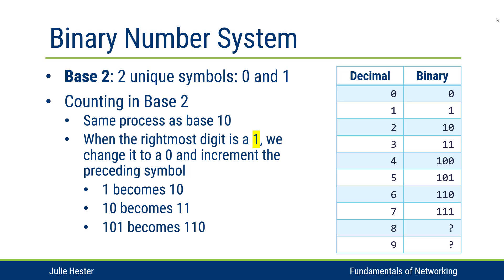Decimal seven is equivalent to binary one one one, so what will we need to do to make eight? The one one one will become one zero zero zero — we're just following the same pattern. Then nine would become one zero zero one, and we would continue so forth and so on. With computer networking, we're really concerned with the first eight binary digits.